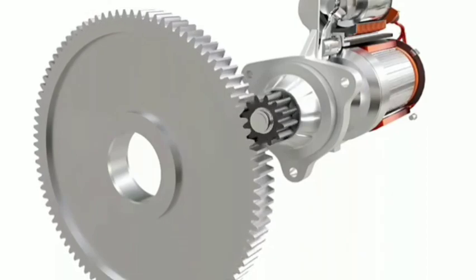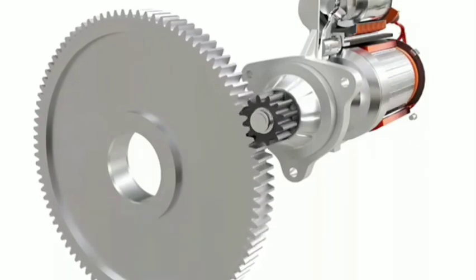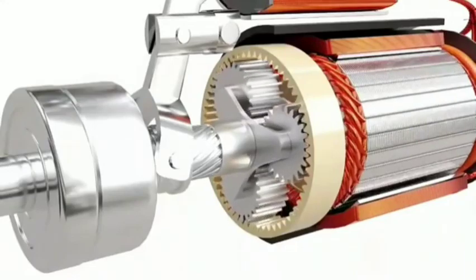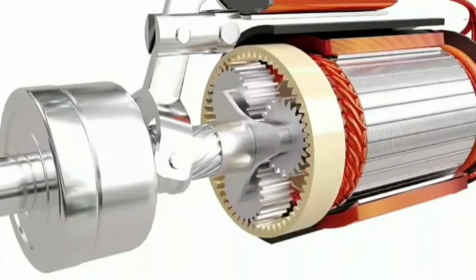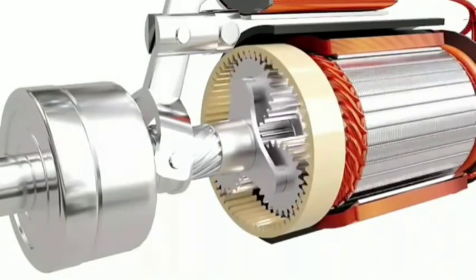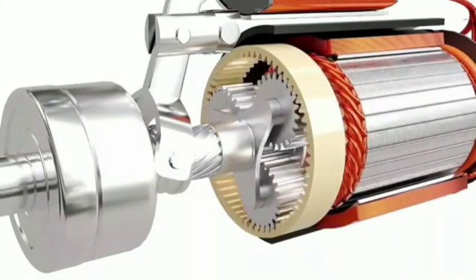A planetary gear set is introduced to increase the torque further. Planetary gears are incredibly useful for large gear reductions with less weight and limited space. It consists of a sun gear, a ring gear, a carrier, and a set of planet gears.